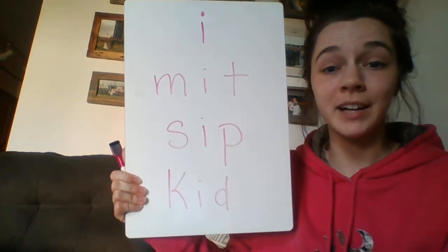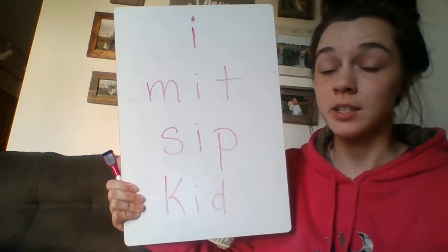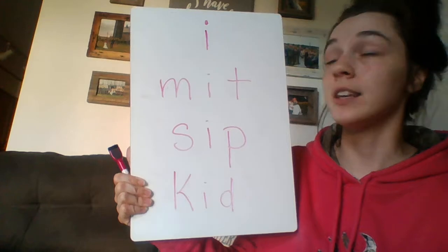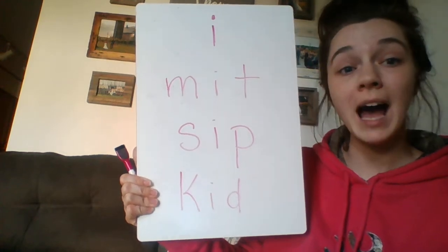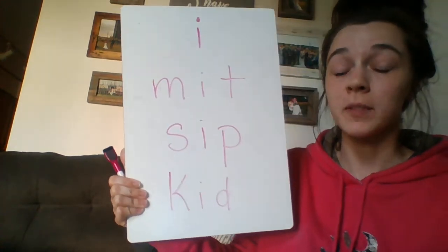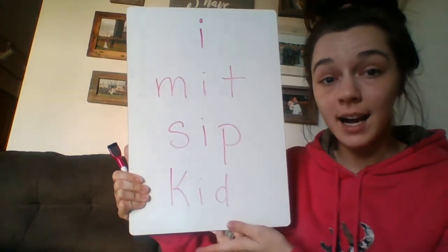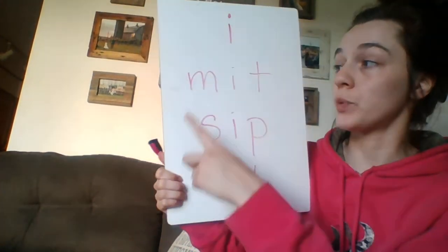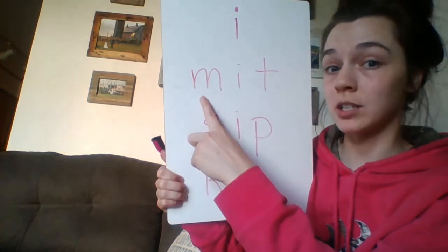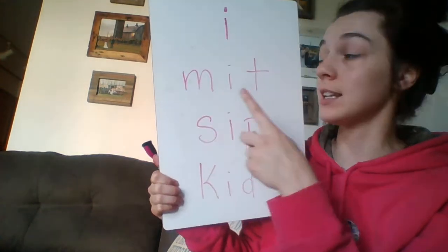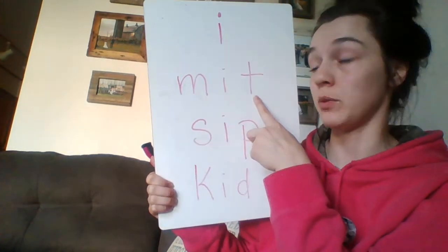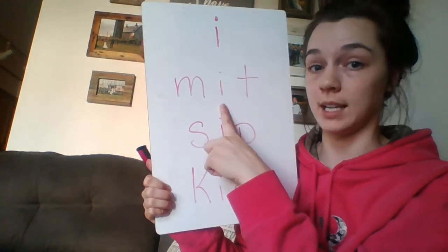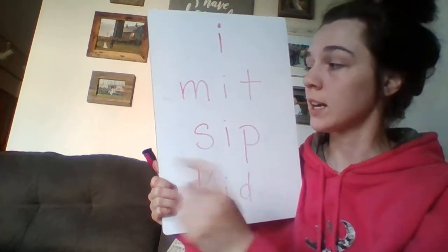Here we have consonant-vowel-consonant words with the short vowel I in the middle. Again, a consonant-vowel-consonant word is a word that starts with a consonant and ends with a consonant with a vowel in the middle.